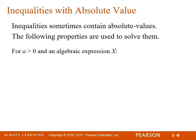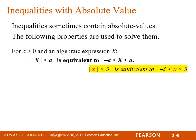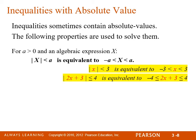When talking about inequalities with absolute values, for a greater than 0 and an algebraic expression x, if the absolute value of x is less than a, this is equivalent to x being between negative a and positive a. For example, the absolute value of x is less than 3 is equivalent to x being greater than negative 3 and less than 3. This works also for less than or equal to inequalities.